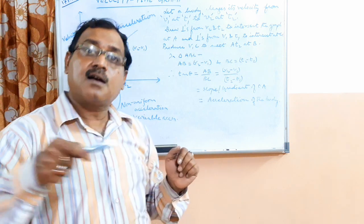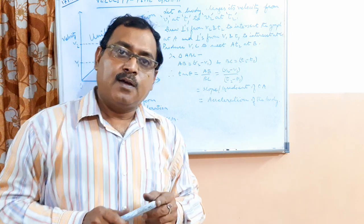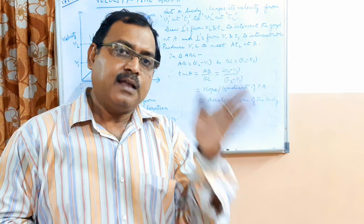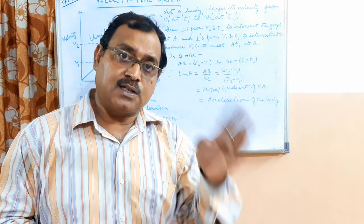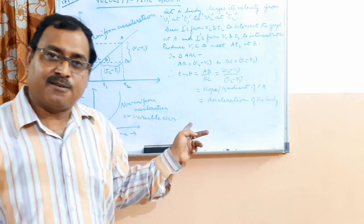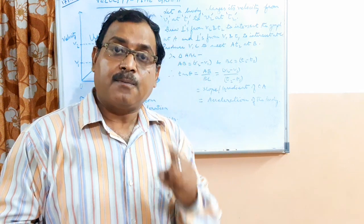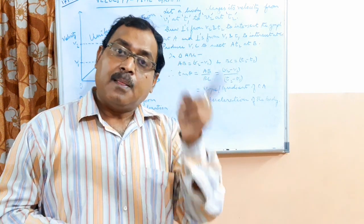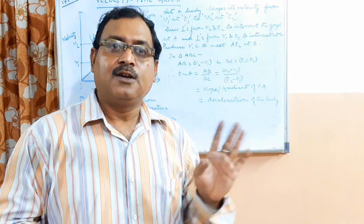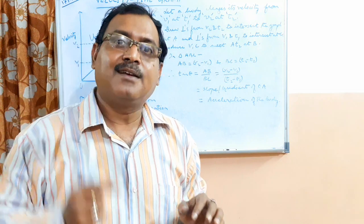To summarize: the slope of a distance-time graph gives speed; the slope of a displacement-time graph gives velocity; the slope of a velocity-time graph gives acceleration; the area in a speed-time graph gives distance; and the area in a velocity-time graph gives displacement. These five things you must keep firmly in your head.